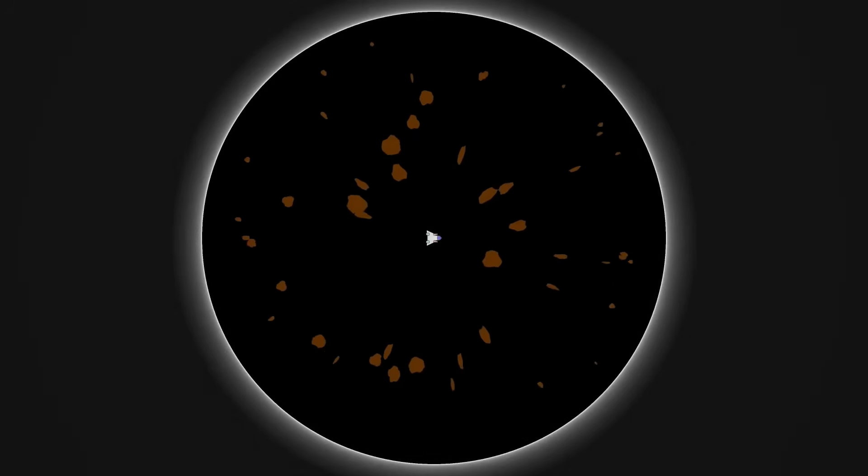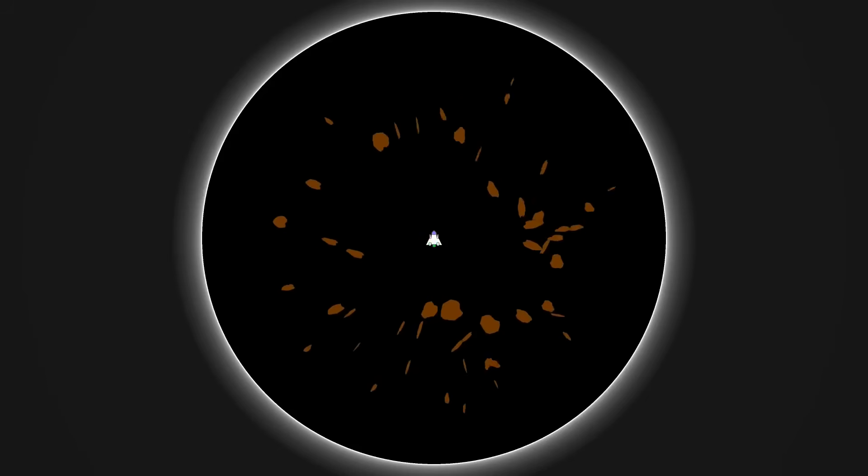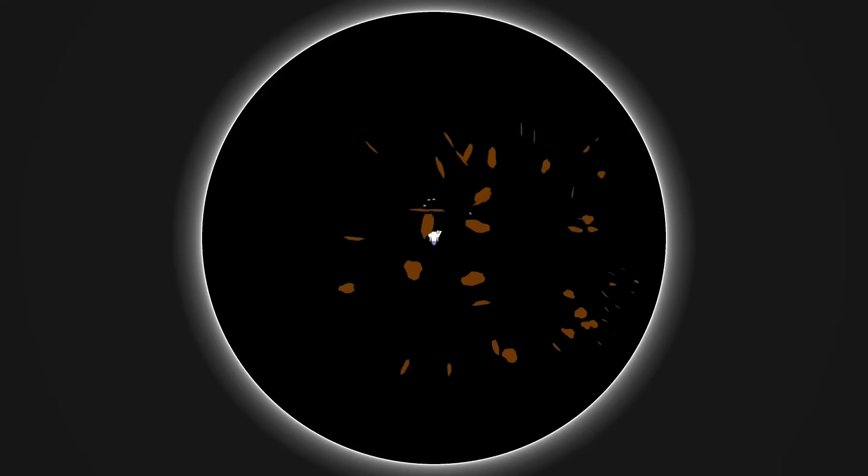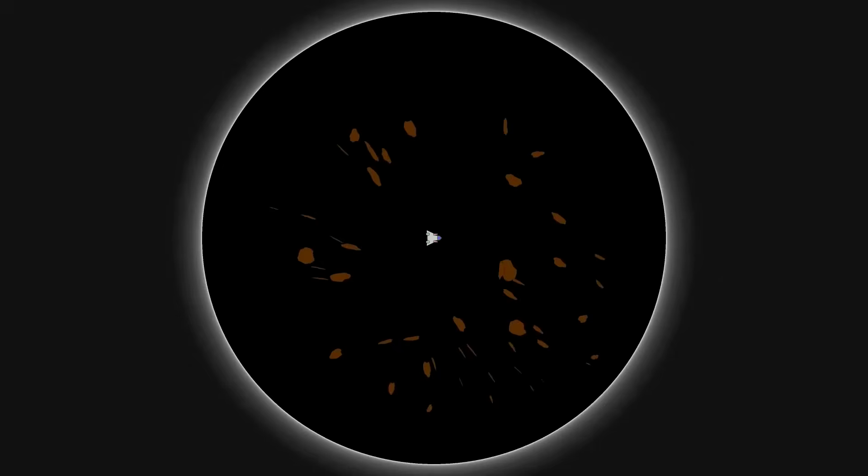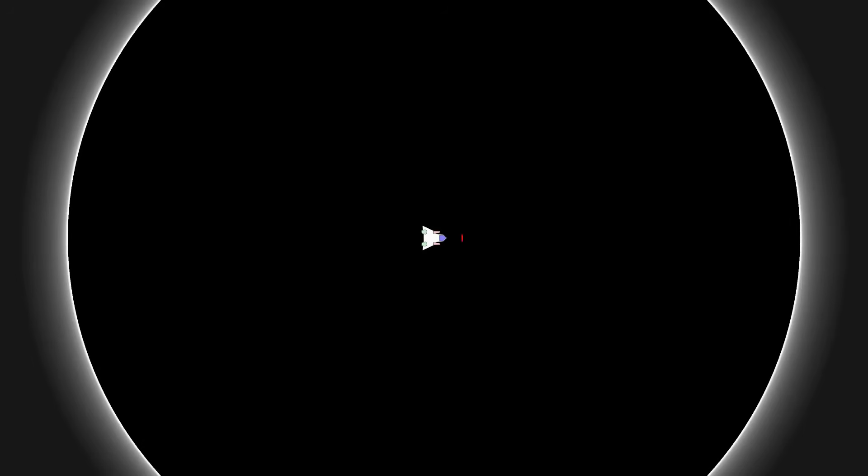Now, this is the anti-de Sitter spacetime, which is a relativistic version of hyperbolic geometry. As the name suggests, it is the opposite of the de Sitter spacetime. Let's shoot a missile. Beware, it will eventually return to us.